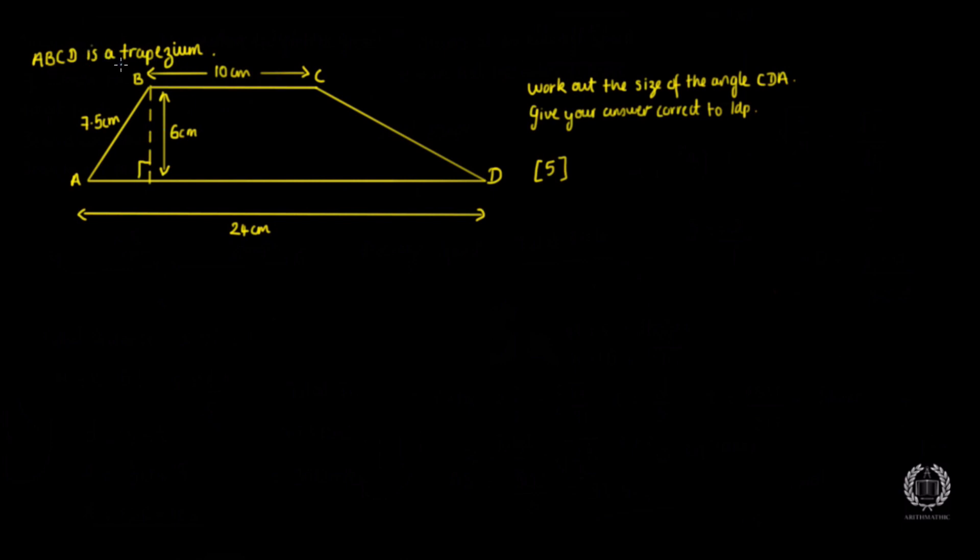So let's get straight to this question. The question is asking us ABCD is a trapezium, work out the size of the angle CDA, give your answer correct to one decimal place. So my angle CDA is basically going to be the letter that's in the middle, which is my angle. And I'm just going to label this as theta.